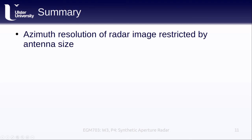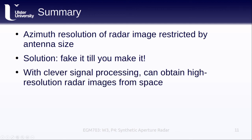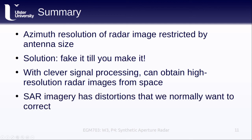In this lesson, we've discussed how the azimuth resolution of a real aperture radar image is restricted by the antenna size, which means that creating a real aperture radar image from space is pretty much impossible. The solution is to fake it until you make it — we simulate having a very large antenna, a synthetic aperture, which helps us get around this limitation. With this and the clever signal processing techniques introduced in the previous lesson, we can get high-resolution radar images from space. SAR images have a number of distortions that we need to correct, and we'll see how some of this works in this week's practical on SAR image processing.